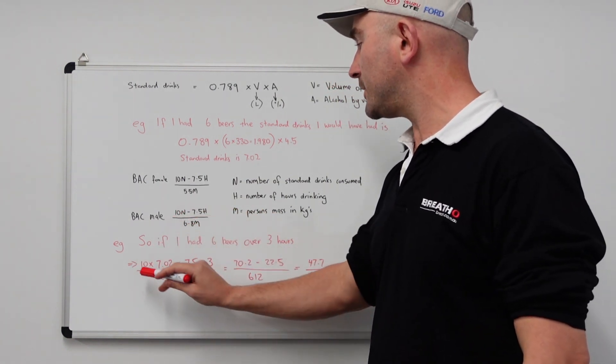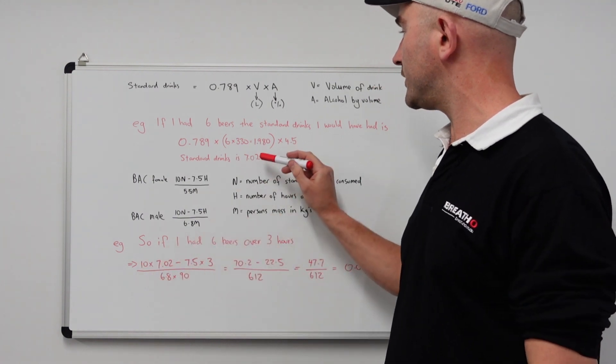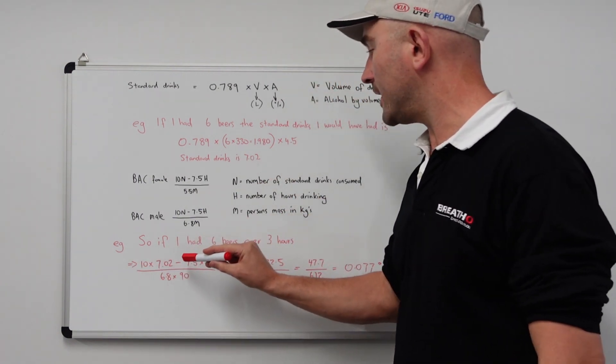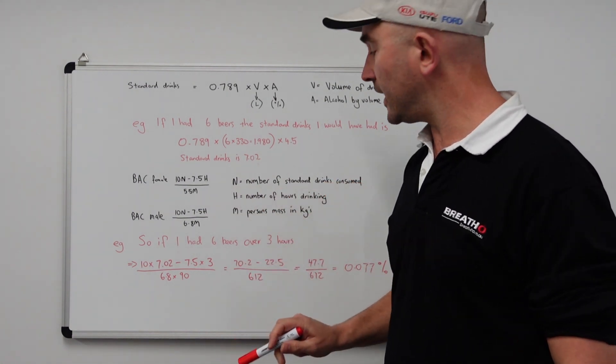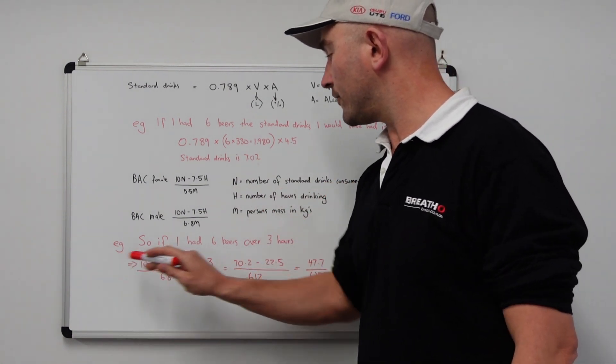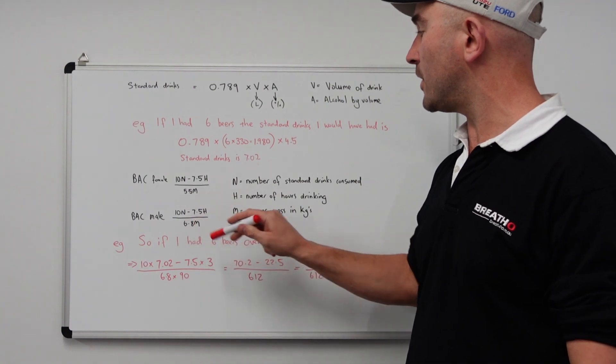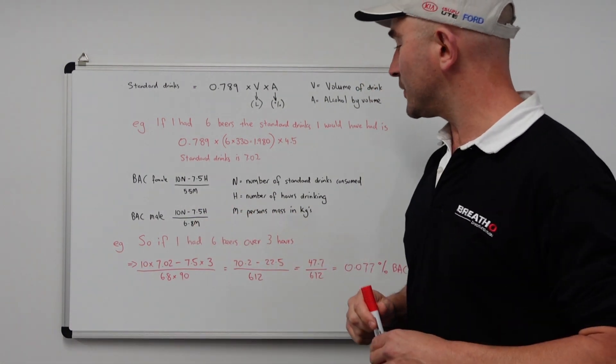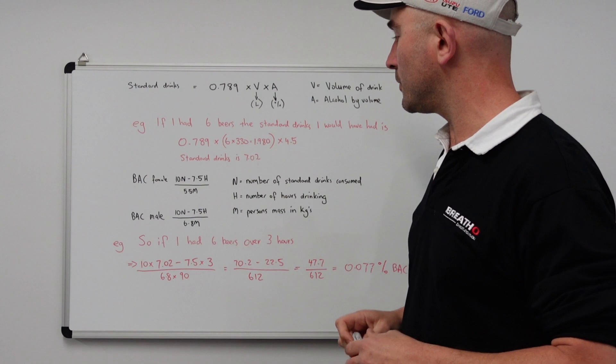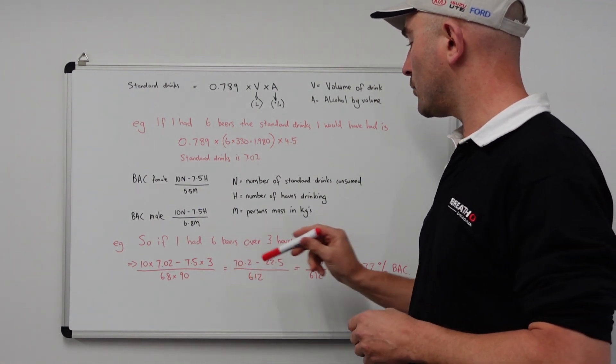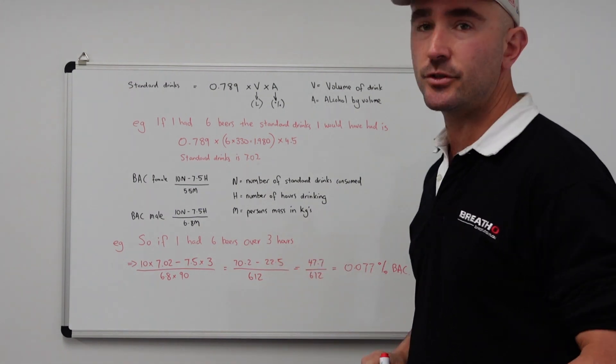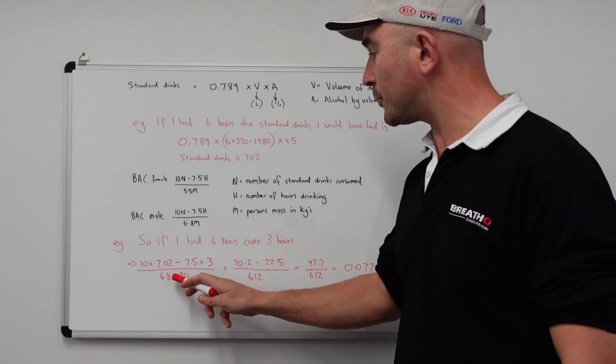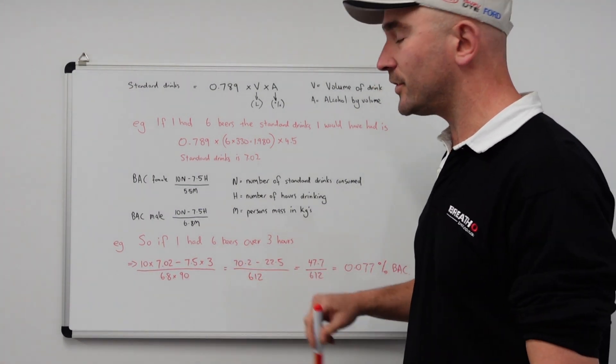So 10 times N would be 10 times the standard drinks minus 7.5 times number of hours drinking, which is 3, divided by 6.8 times my mass, which is 90 at the moment. So let's work that out. So 10 times 7.02 is 70.2 minus 7.5 times 3, which is 22.5 divided by 6.8 times my mass, which is 612.